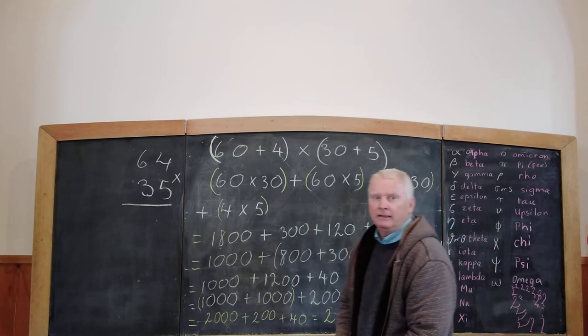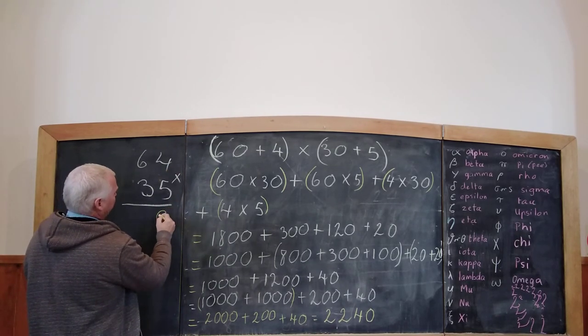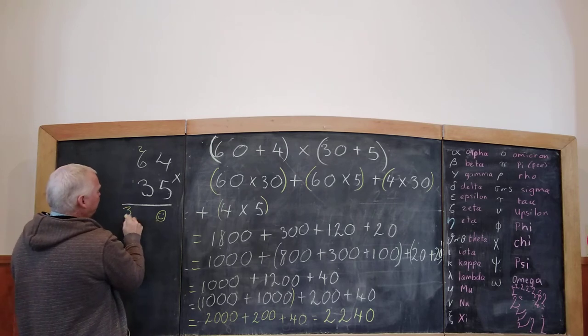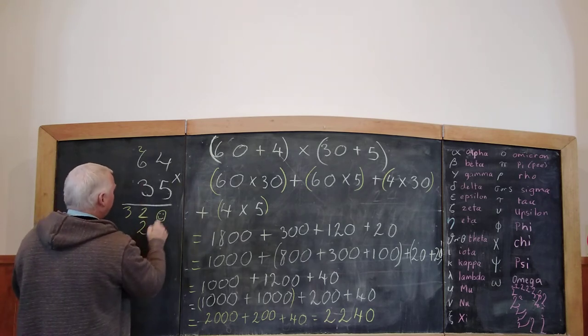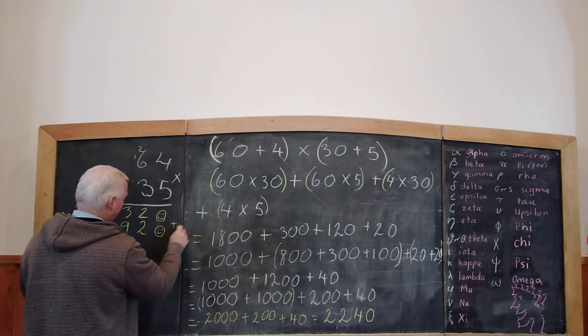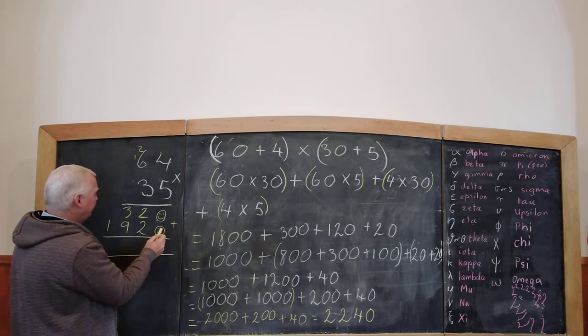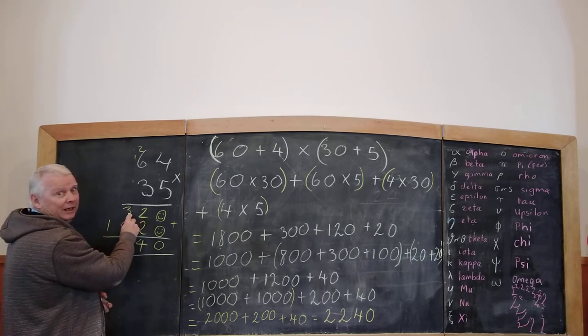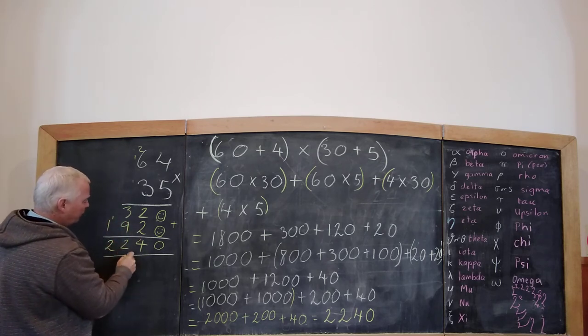Let's see if it works out using the more traditional model. 0 plus 0, that's 0. 2 plus 2, that's 4. 3 plus 9 is 12, but then the 2. Carry the 1 and 9 minus 2. 2240, 2240.